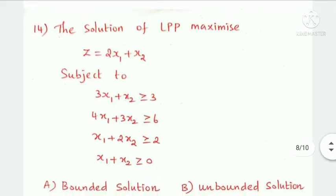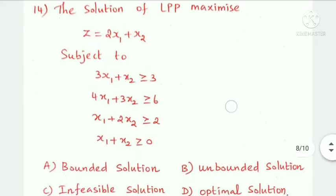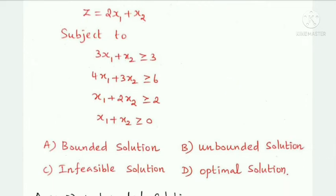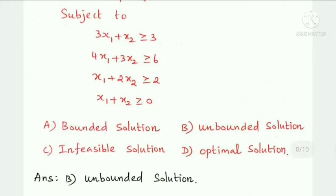Next question: the solution of the linear programming problem — the objective function is of the maximization type with constraints — gives an unbounded solution, infeasible solution, or optimal solution. Option B is the answer: unbounded solution.